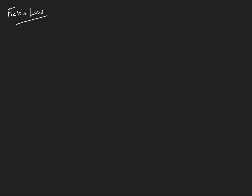In the last video we looked at Fick's law, so let's recap that. What Fick's law says is that the volume of gas that diffuses across a membrane is proportional to the surface area, proportional to the diffusion properties of the gas, and proportional to the partial pressure difference across that membrane. It's inversely proportional to the thickness of the membrane. We covered this in the last video, so let's quickly recap.